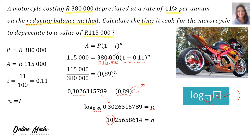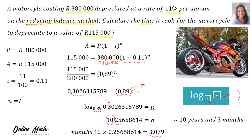The 10 is 10 years, but now you have to calculate the months. You take whatever was after the decimal point — 0.2565 — and multiply that by 12, and you get 3.079 months. Rounding that off, your final answer is 10 years and 3 months.